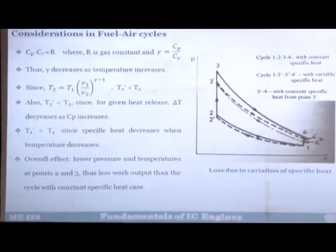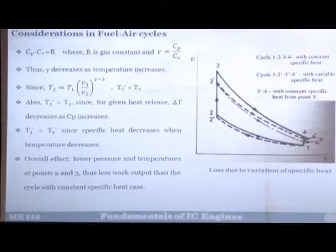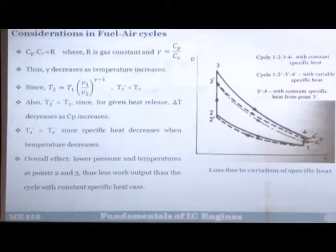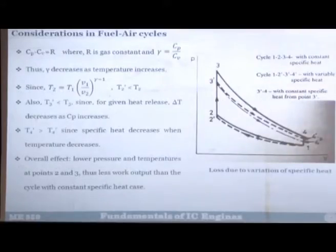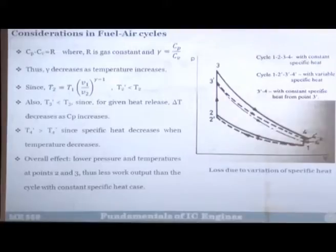In the fuel-air cycle, Cp minus Cv equals R, the gas constant, and gamma (γ) is the ratio of specific heats, Cp/Cv. From these relationships, gamma decreases as temperature increases. So in process 1–2 (adiabatic compression), T₂ = T₁ × (V₁/V₂)^(γ−1), and since gamma changes with temperature, the actual temperature at the end of compression will be affected.